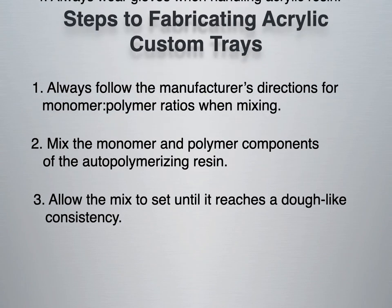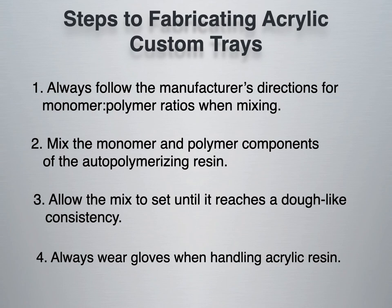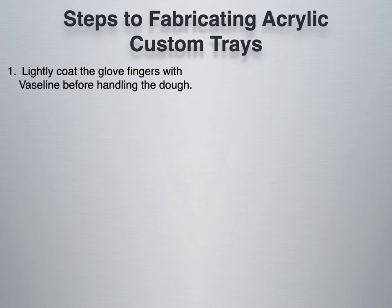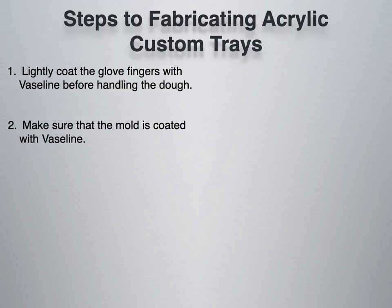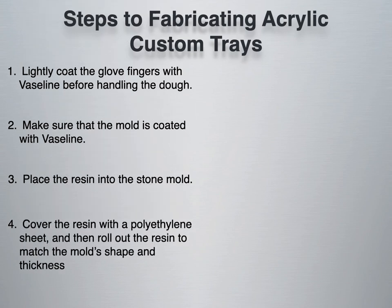When fabricating a custom tray out of acrylic or self-curing resin, always follow the manufacturer's directions for monomer and polymer ratios. Mix the monomer and polymer components of the auto-polymerizing resin. Allow the mixture to set until it reaches a doughy-like consistency, and wear gloves when handling the resin — you don't want monomer seeping into your skin. Always wear proper PPE. Lightly coat glove fingers with vaseline before handling the dough so it doesn't become sticky. Make sure the mold is coated with vaseline.